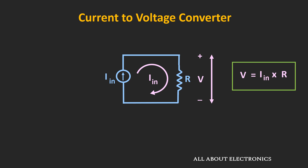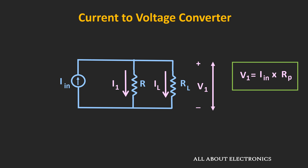Now suppose if we connect a load across this resistor R, then ideally the same voltage should also appear across the load. But whenever we connect the load RL, some current will also flow through RL. Because of that, the voltage which appears across RL is given by the input current multiplied by the parallel combination of R and RL. So the voltage across the load will depend upon the load resistance. Ideally, the converted voltage should be independent of the load resistance. Unless the load is much greater than R, the actual voltage across the load will be less than the converted voltage.